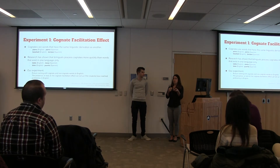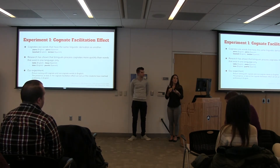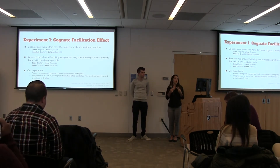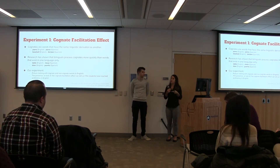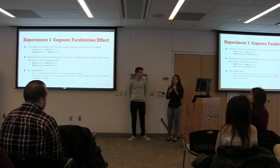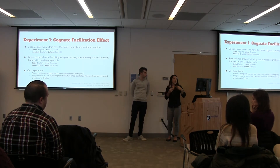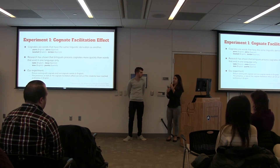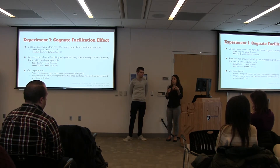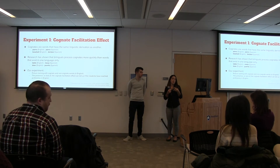So now I'm going to explain the first experiment — the cognate facilitation effect. A cognate refers to words that have the same linguistic derivation as others. For example, 'piano' is written and means the same in Spanish. And 'baseball' in Spanish would be 'béisbol.' Even though they might be somewhat different grammatically, you can still see the similarities and it means the same thing.